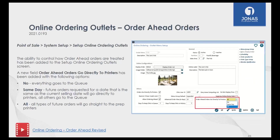The next feature is for the Online Ordering module. As a reminder, any slide with the little video icon in the bottom left has a video available. We do have an Online Ordering module in Jonas — this was a big deal for a lot of clubs at the start of the pandemic when it was the only way to have food and beverage sales. We've given you three options for what happens with member orders that come in ahead of time.